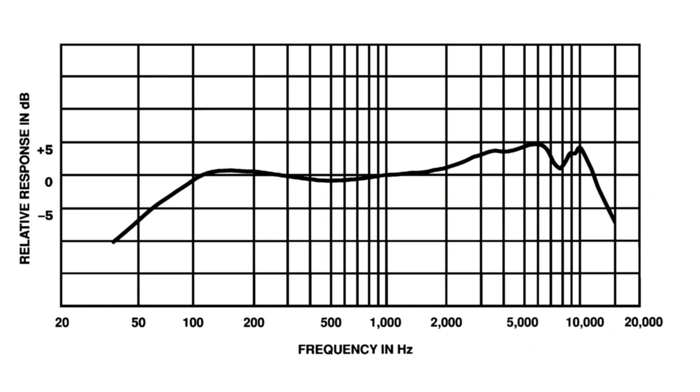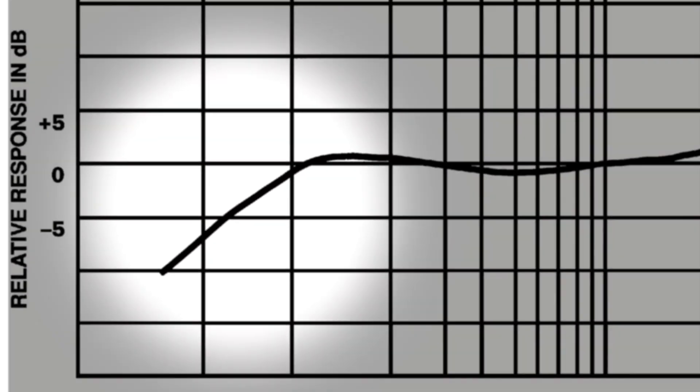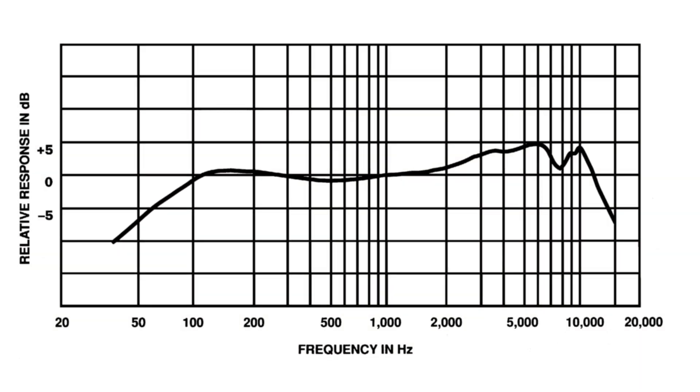A mic with decreased sensitivity to low frequencies reduces pickup of room noise and vibration and counteracts the buildup of bass that can occur when the mic is used very close to the source, which is called proximity effect.